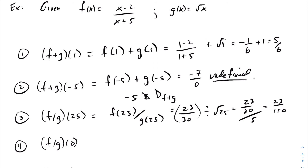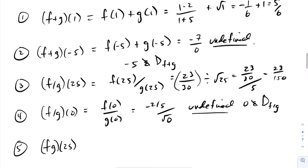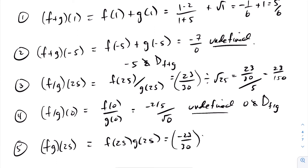For f(0)/g(0): f(0) = −2/5 and g(0) = √0 = 0, so we are dividing by zero — undefined. Zero is not in the domain of f divided by g. For f(25) · g(25): f(25) = −23/30 and g(25) = √25 = 5, so (−23/30) × 5 = −23/6.